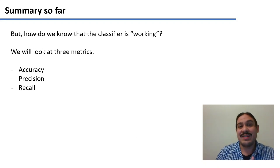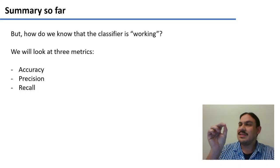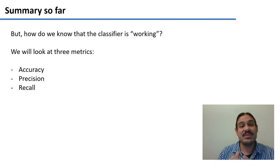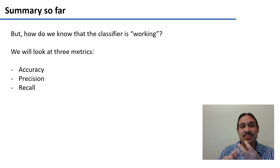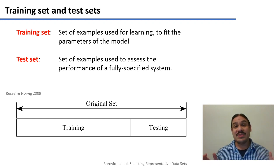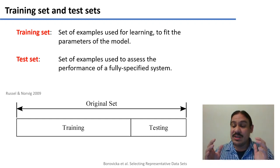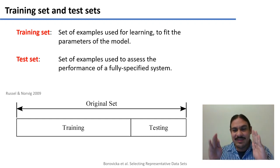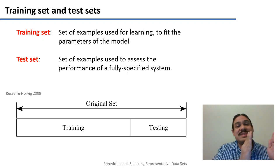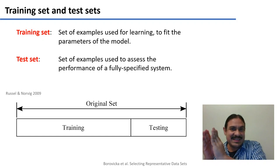But how do we know it's working? How do we know that it's actually assigning the correct labels to things it hasn't seen before? We're going to look at three different metrics to evaluate our model: accuracy, precision, and recall. The very first thing, just as a reminder, is that we need to take all of the data that we have and split it into at least two parts: a training set and a smaller testing set.